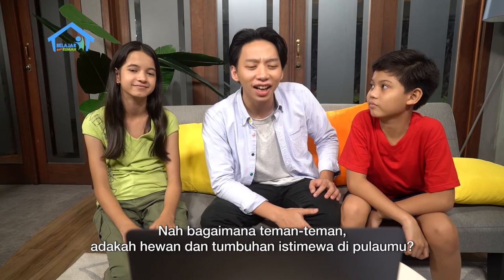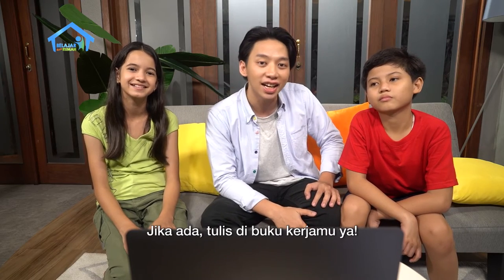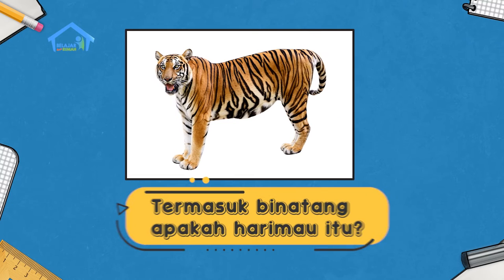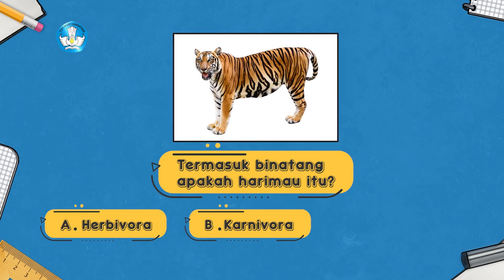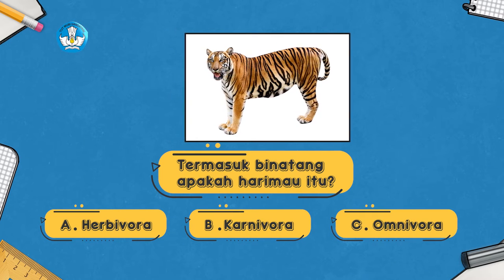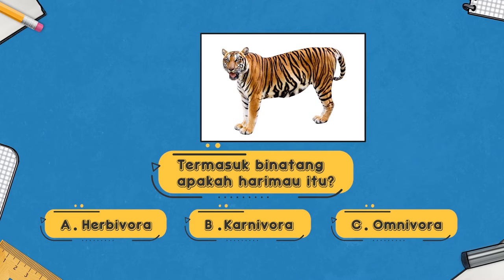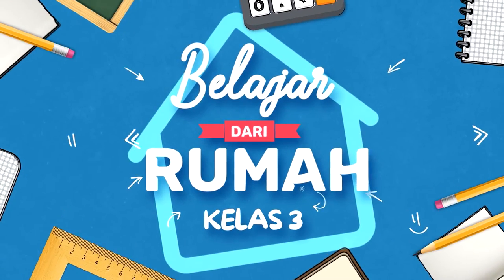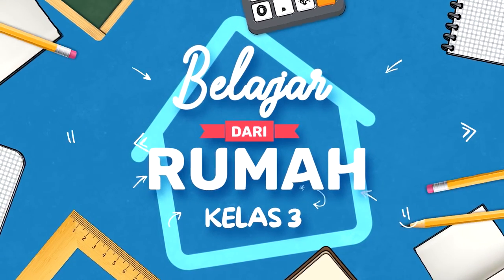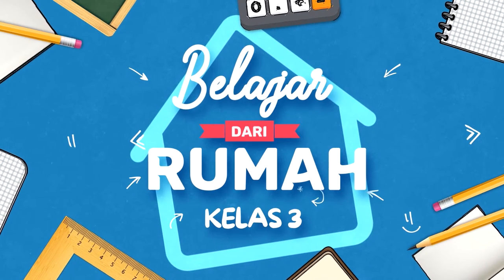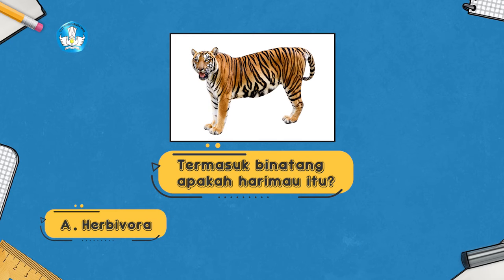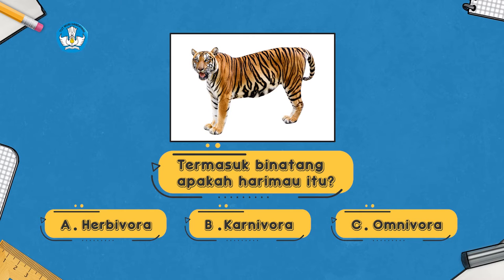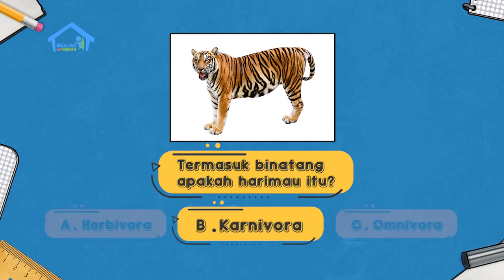Nah bagaimana teman-teman, adakah hewan dan tumbuhan istimewa di pulaumu? Jika ada, tulis di buku kerja kamu ya. Termasuk binatang apakah harimau itu? A. Herbivora, B. Carnivora, C. Omnivora. Jawabannya B, Carnivora.